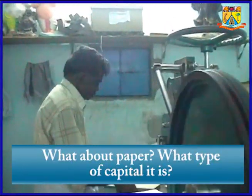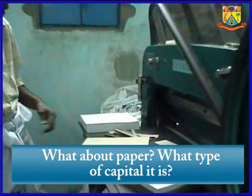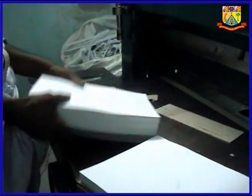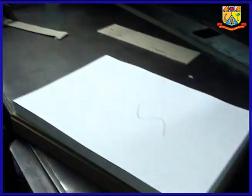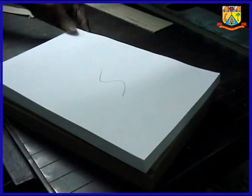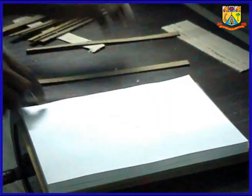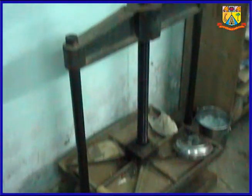What about paper? What type of capital is it? In binding works, machinery is fixed capital, whereas lubricating oil, power to run the machine, labor to operate it, and paper to be cut are all variable capital. To produce the output in an enterprise, there is a proportion of these two types of capital, depending on the type of technology and nature of product.